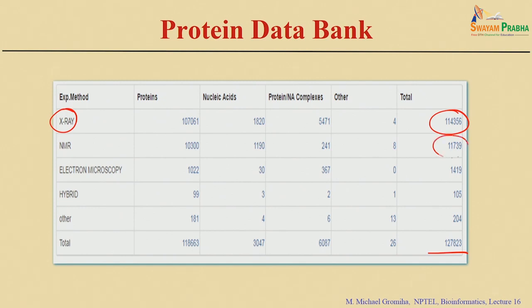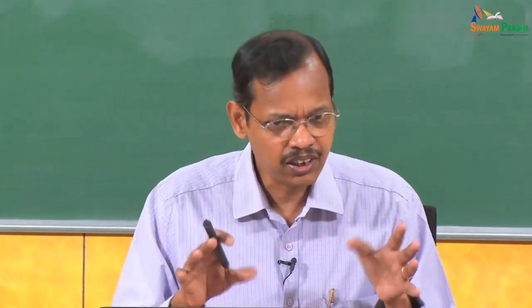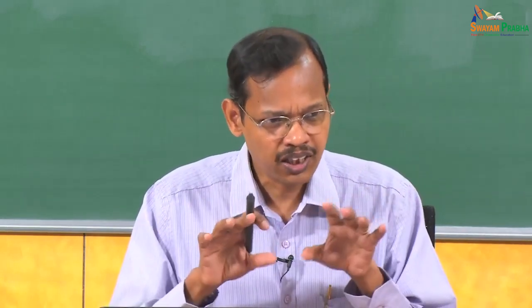For NMR spectroscopy there are about 11,000 structures, followed by other techniques. Looking at different macromolecule types, proteins have the highest number — about 118,000 — with about 3,000 nucleic acid structures and about 6,000 complexes, including both protein-RNA and protein-DNA complexes. You can use the PDB to get collective information from protein families or create datasets with specific resolution or organism filters.